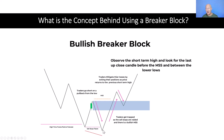We get our lower low and the market pulls back higher. We take out this short term high, which gives us our bullish market structure shift, and the market pulls back into this zone before taking off again.